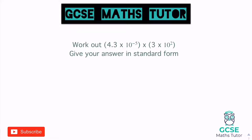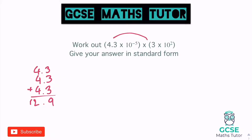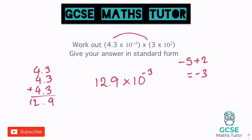Applying the same trick: 4.3 times 3. Without a calculator, we add three lots of 4.3: that gives us 12.9. So we have 12.9 times 10 to the power of something. The first power is negative 5, and we add 2, giving negative 3. So 12.9 times 10 to the negative 3. To balance: make the number one jump smaller to 1.29, and the power one jump bigger — from negative 3 to negative 2.